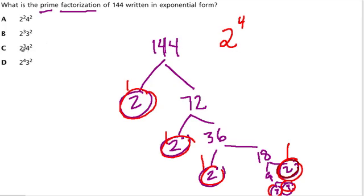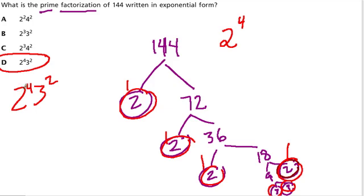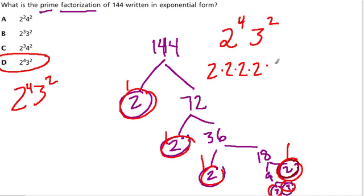The only answer choice that has that is D, and that makes sense. It says 2 to the 4th times 3 to the 2nd, which is exactly what we have here. There are two 3s, so it's 3 to the 2nd. And this just means 2 times 2 times 2 times 2 times 3 times 3.